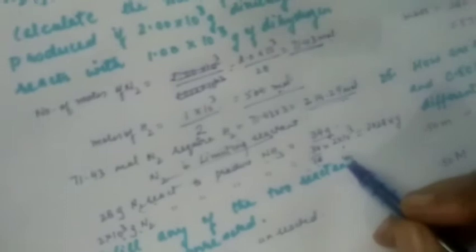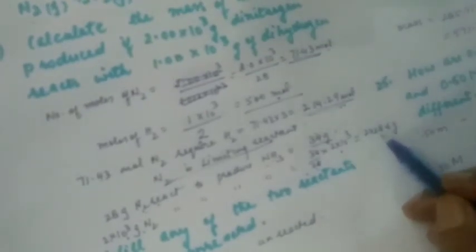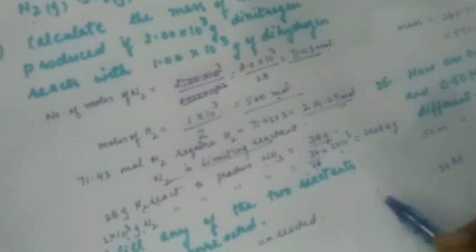Since N₂ is the limiting reactant, the product formed is based on N₂. From the equation, 28 g N₂ produces 34 g NH₃ (2 moles × 17 g/mol). So from 2×10³ g N₂: mass of NH₃ = (34/28) × 2×10³ = 2428.6 g NH₃. Unreacted H₂: 500 − 214.29 = 285.71 moles unreacted, mass = 285.71 × 2 = 571.42 grams of H₂ remains unreacted.